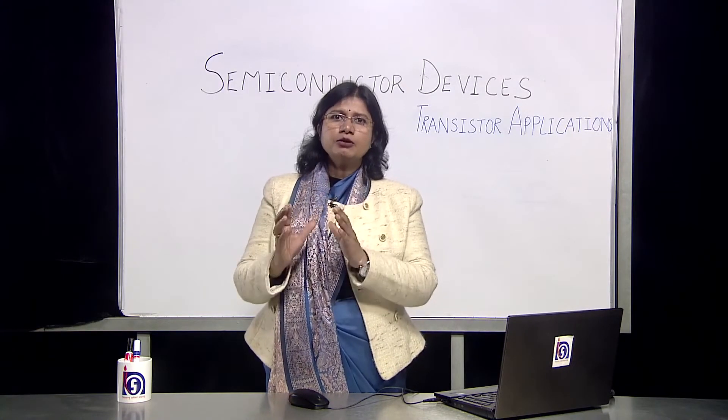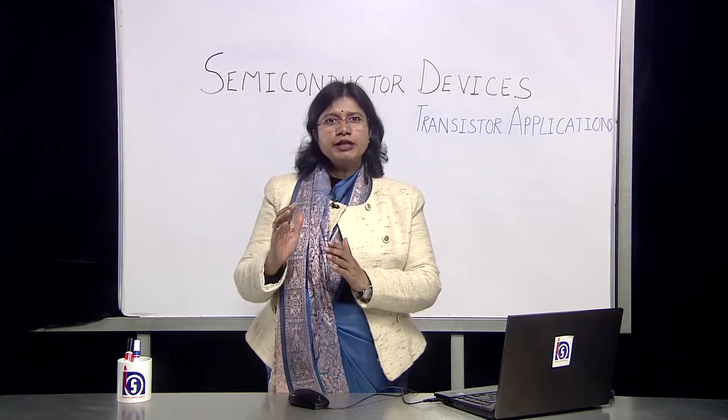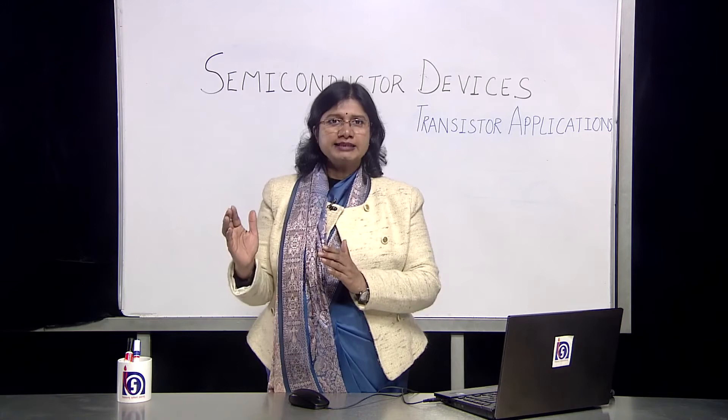To begin with there's a small amount of current IB which is flowing across the circuit and corresponding to this we get a large amount of collector current IC.